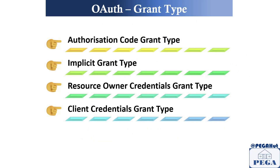Now let's talk about the grant types — the final part of the presentation — and how they are used. There are four main grant types we see in day-to-day life: first is the Authorization Code grant type, second is the Implicit grant type, third is the Resource Owner Credential grant type, and fourth is the Client Credential grant type.